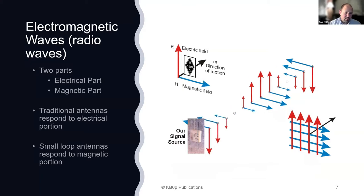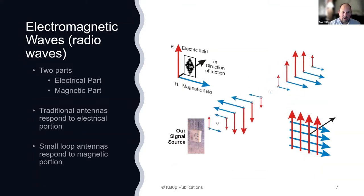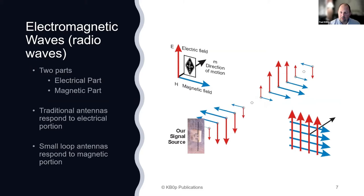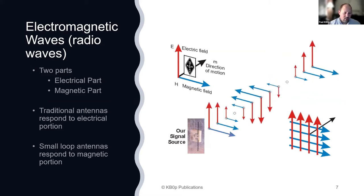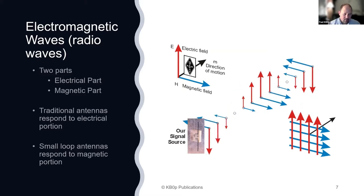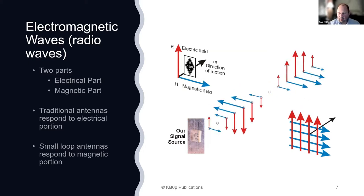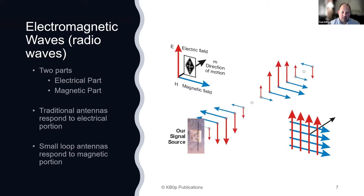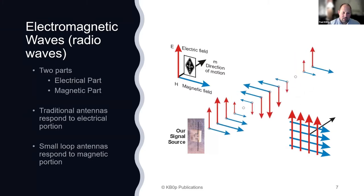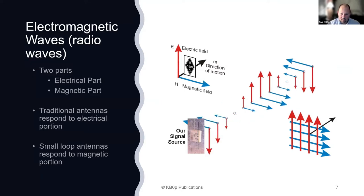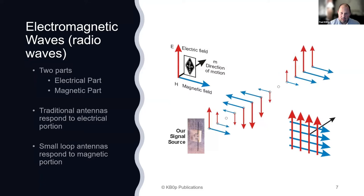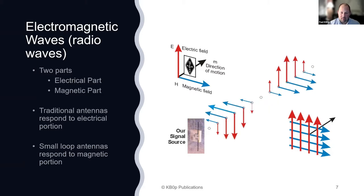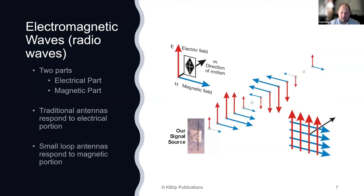Maxwell's theory was that the electromagnetic wave, or radio wave as we know it today, consists of two parts: an electrical component and a magnetic component. Traditional antennas — like a dipole — respond to the electrical portion of the radio wave. A lot of the man-made noise we experience in our homes or businesses also resides in the electrical part of the wave, so a lot of our antennas will pick up that electrical noise.